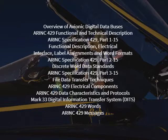Topics include ARINC 429 functional and technical description, and ARINC specification 429 Part 1, covering functional description, electrical interface, label assignments, and word formats. Also covered is ARINC specification 429 Part 2, which addresses discrete word data standards.